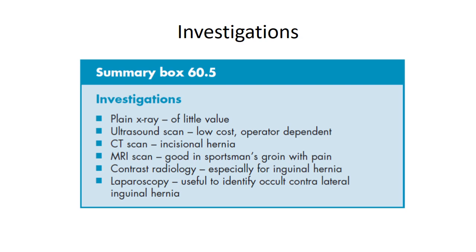Investigations can be carried out but mainly the diagnosis of hernia is clinical. Plain X-ray is of little value. Ultrasound scan can be done — it has low cost but is operator dependent. CT scan is done for incisional hernia. MRI scan is good in sportsman's groin with pain. Contrast radiology is especially useful for inguinal hernia, and laparoscopy is useful to identify occult contralateral inguinal hernia.